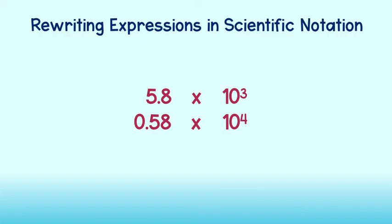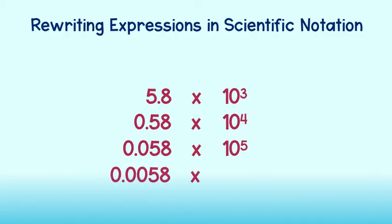We can move the decimal to the left once more — just make sure to add another power of 10 to the second factor. Smaller by a power of 10, larger by a power of 10. And the same is true if we want to make the first factor larger. We can move the decimal once to the right, but then we would have to subtract a power of 10. We can continue this as needed.